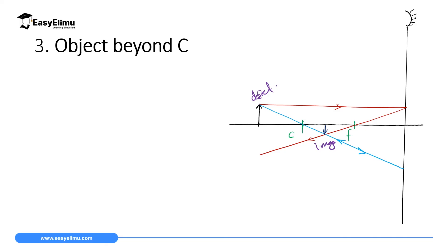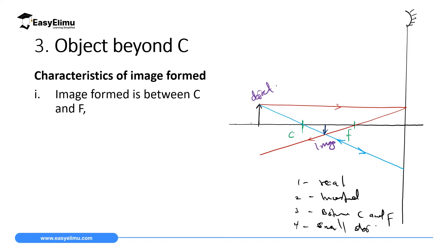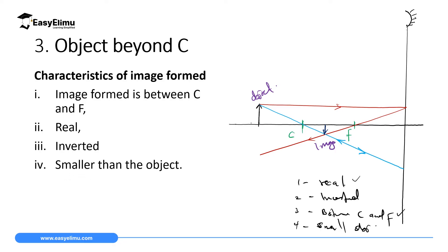For an object beyond C, the characteristics of the image are: the image is real, the image is inverted, the image is formed between C and F, and the image is smaller than the object. The object is very large while the image formed is very small — consistent with what we can see from the diagram.